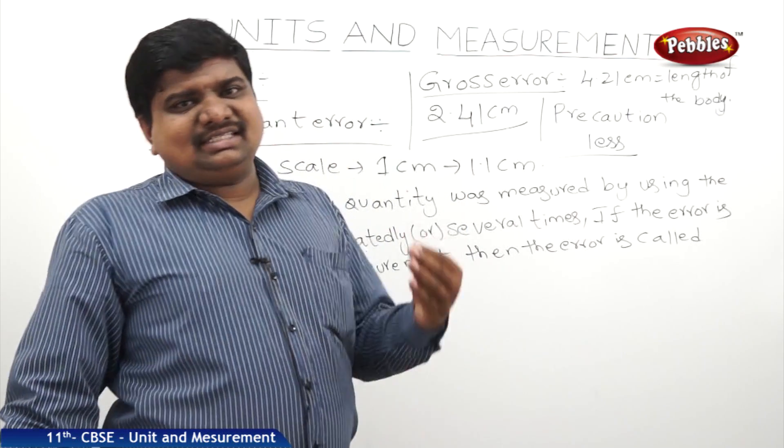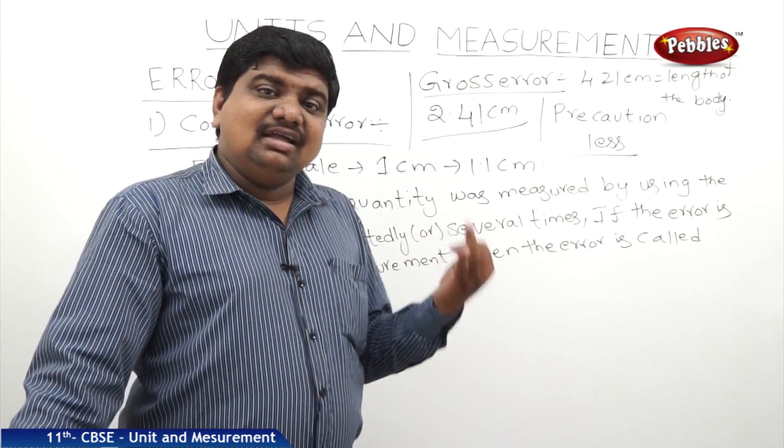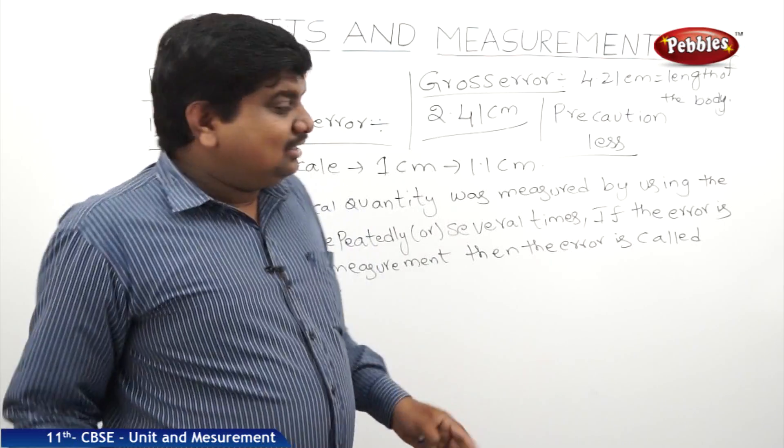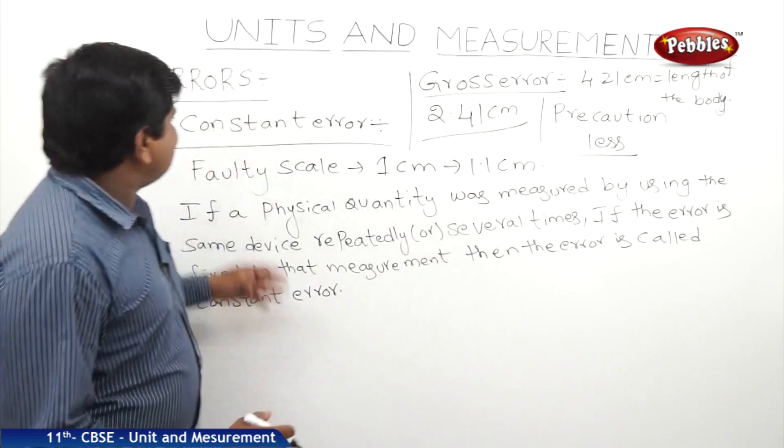These four, whatever it is, constant error, gross error, random error, systematic error, these all four are under the classification of errors. If you like this video, please give a thumbs up. Please subscribe to our channel to get more videos on CBSE syllabus.